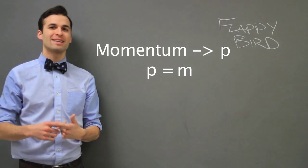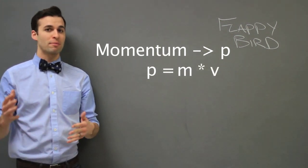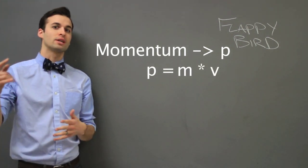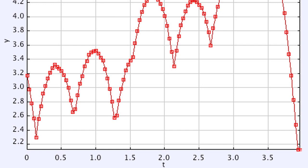Momentum is an object's mass times velocity. Now, Flappy Bird has a changing momentum because he is accelerating down. If we scale this appropriately to 9.8 meters per second squared, like we have here on Earth,